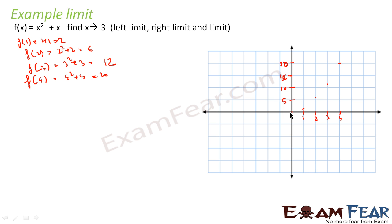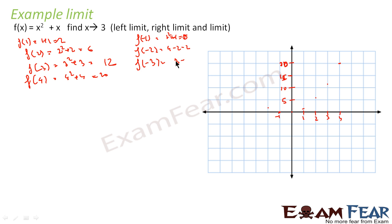f(−1): if you put x = −1, that becomes (−1)² + (−1) = 1 − 1 = 0. So f(−1) is also 0. f(−2) = (−2)² + (−2) = 4 − 2 = 2. f(−3) = (−3)² + (−3) = 9 − 3 = 6. So the graph will be something like this — a parabolic shape.